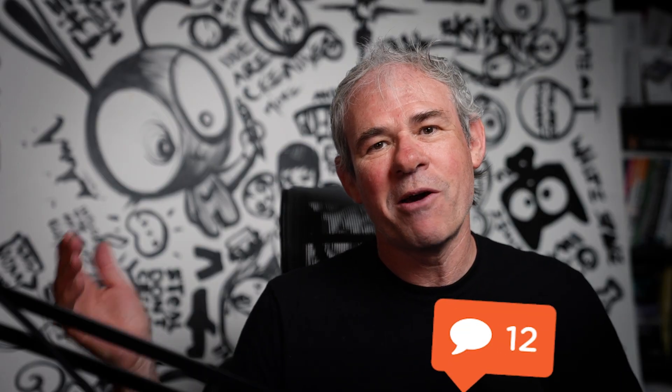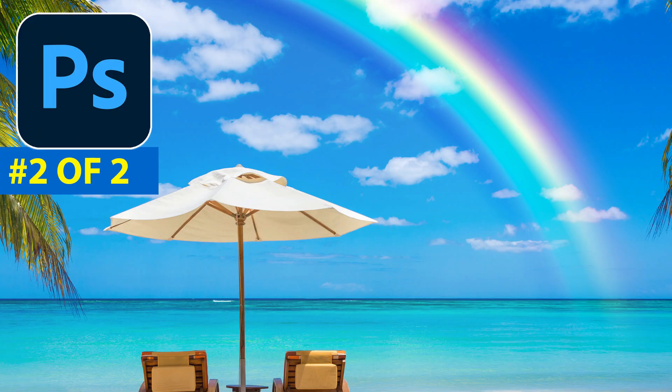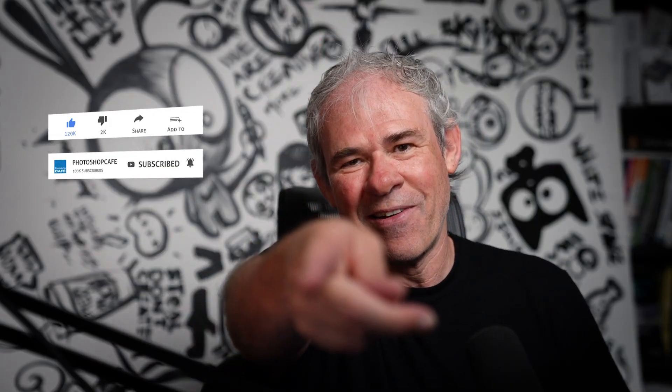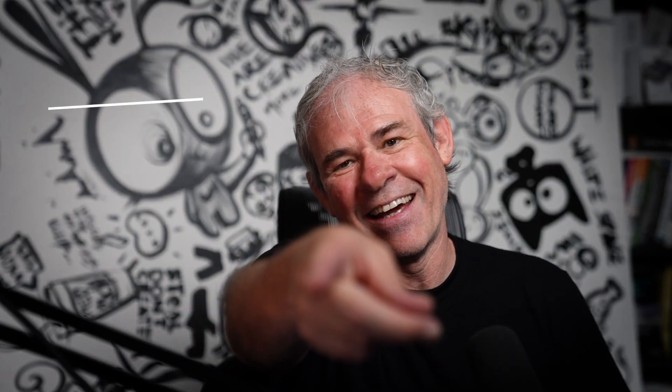Let me know in the comments if you found this tutorial useful and if you learned anything new. Don't forget to also watch the second part of this series, which is how to create rainbows inside of Photoshop with the new gradients. If you're new to the cafe, hit the subscribe button, turn on notifications, and until next time I'll see you at the cafe.